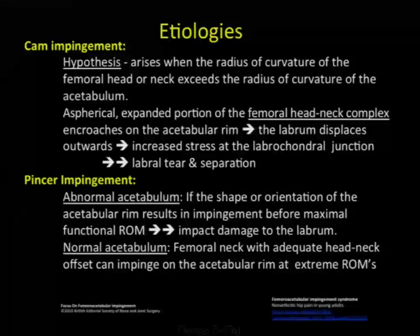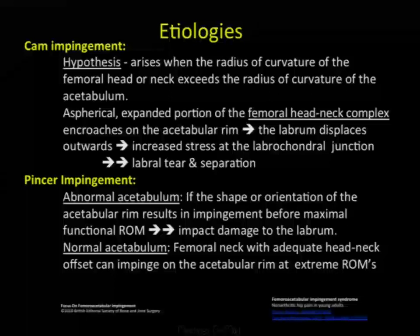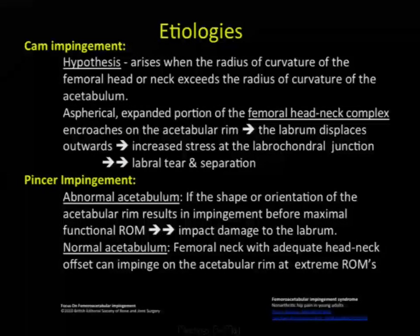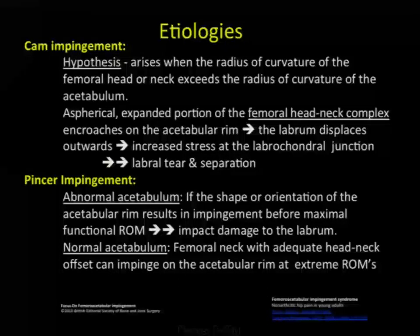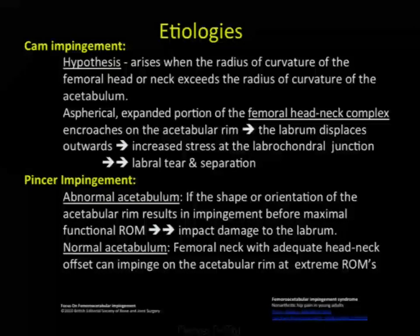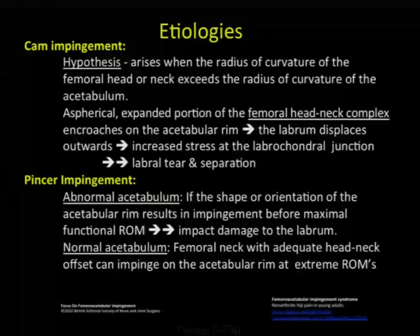There are two main etiologies: CAM and pincer. The hypothesis for CAM impingement is that it arises when the radius of curvature of the femoral head or neck exceeds the radius of curvature of the acetabulum. An aspherical expanded portion at the femoral head-neck junction encroaches on the acetabular rim. The labrum is then displaced outward, producing increased stress at the labral-chondral junction, yielding a labral tear or separation.